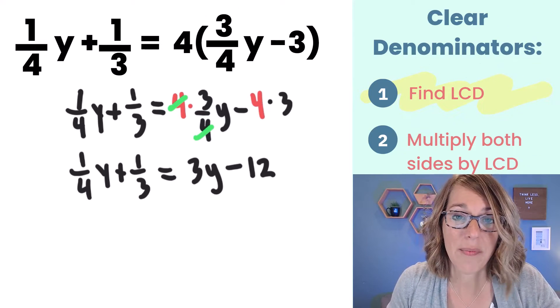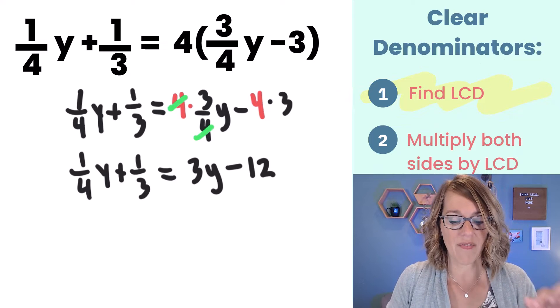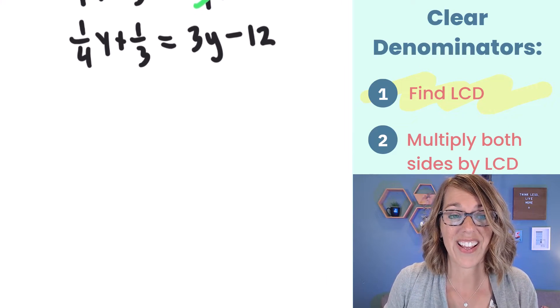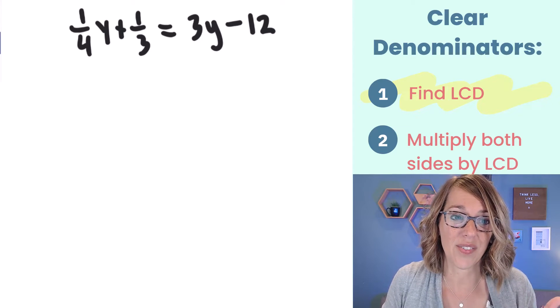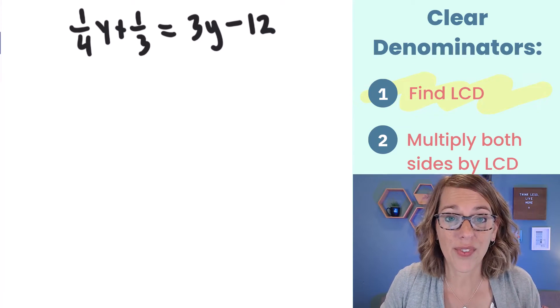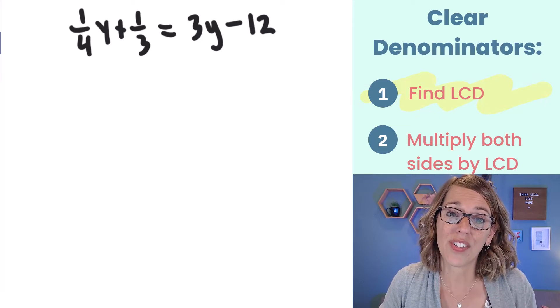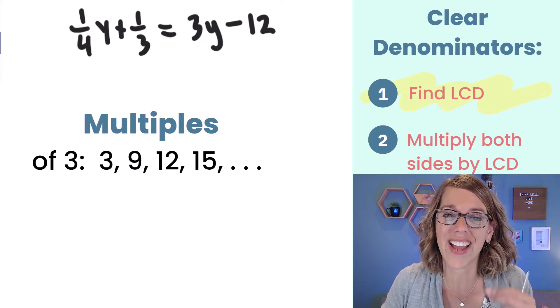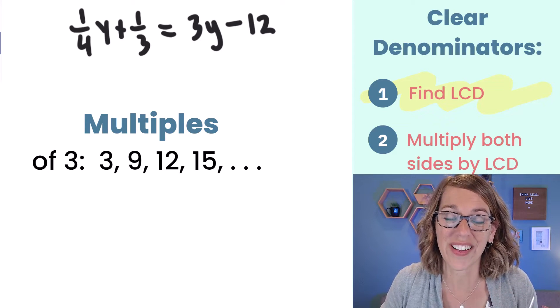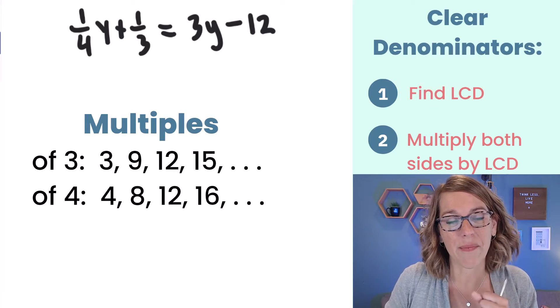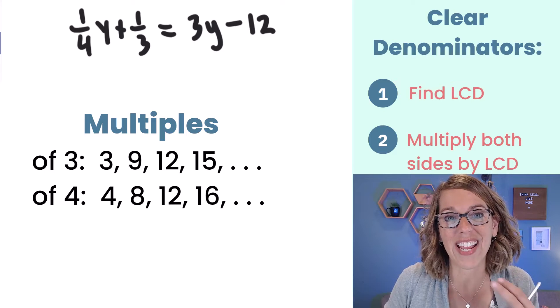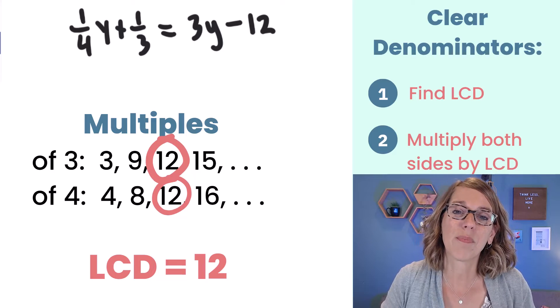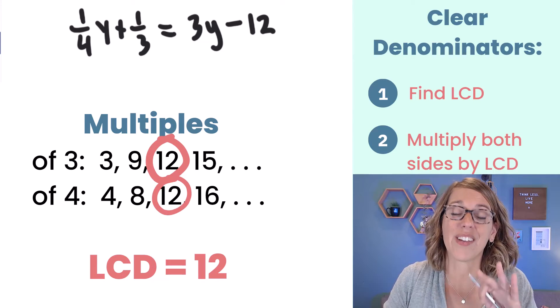Now we're ready to clear denominators and I've got denominators of 4 and 3. Both are on that left hand side. So I want a number that both 4 and 3 divide into. You can get there by guessing or you can also do this using multiples. So the multiples of 3 are 3, 9, 12, 15 and so on. Multiples of our other denominator 4 I've got 4, 8, 12 and so on. Do you see that common denominator? We need to multiply everybody here by a 12.